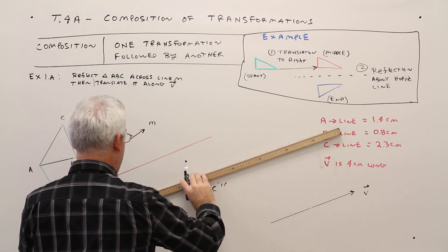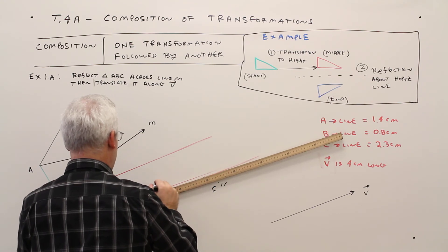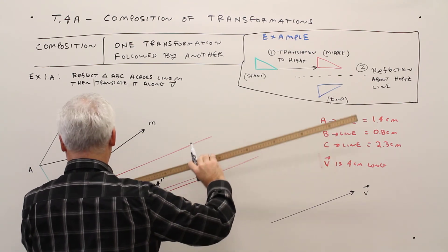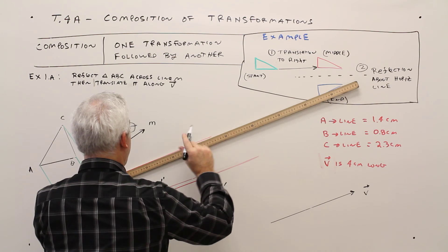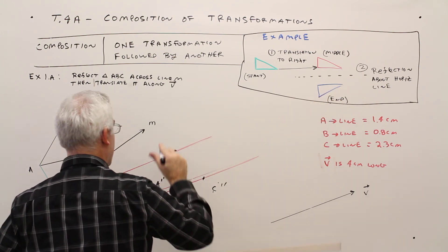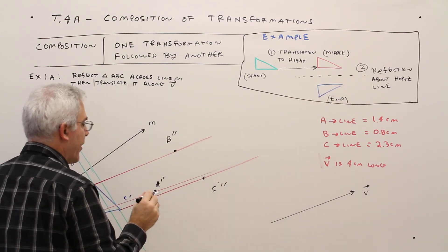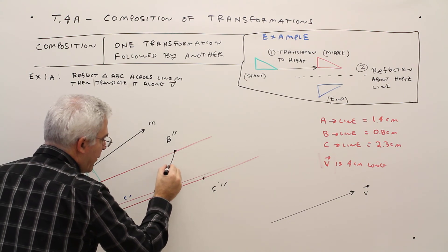From A, measuring out. A double prime. And from B, measuring out. B double prime. And then we can connect those dots.